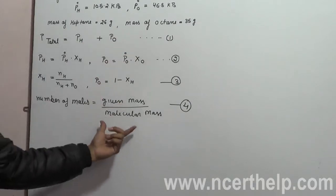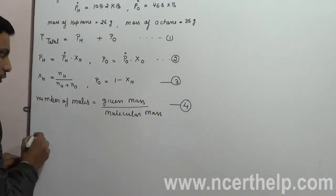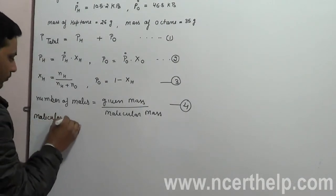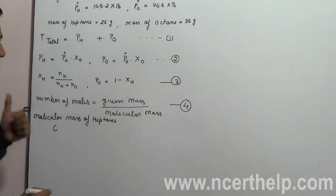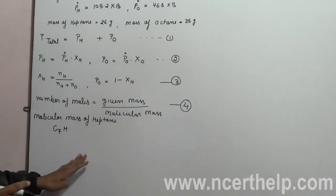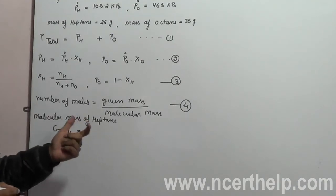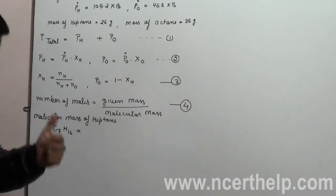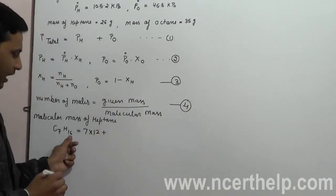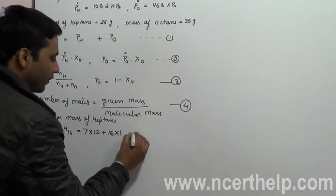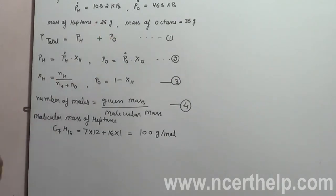We know the given mass, so we need to find the molecular mass. Calculating for heptane: the formula of heptane is C7H16 — seven carbons and, following the rule CₙH₂ₙ₊₂, that gives 2×7+2 = 16 hydrogens. So molecular mass equals 7×12 plus 16×1, and after calculation we get 100 grams per mole.